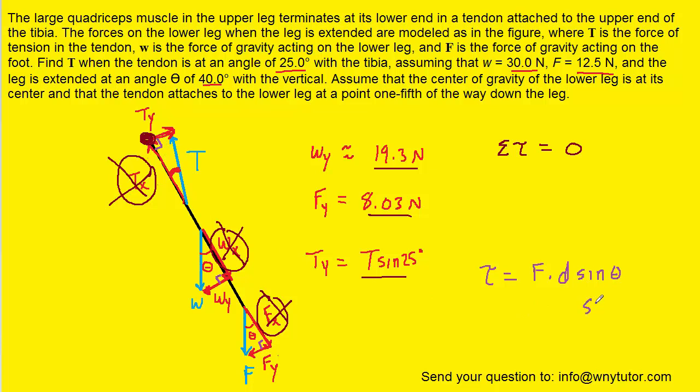Now the sine of 90 degrees, of course, is equal to one. So actually this sine term can be eliminated for all three torques because all three of them have an angle of 90 and the sine of 90 is one.